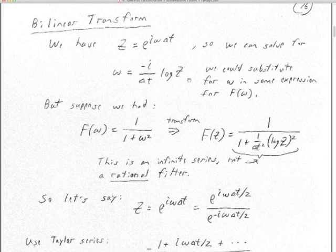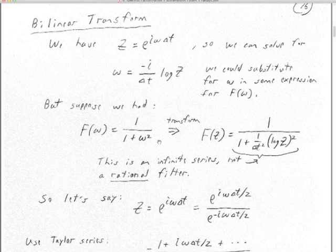Here's a bandpass — actually a low-pass — filter: 1 over the quantity 1 plus omega squared. For high frequencies it'll have low response, and it has its maximum response at zero frequency. Let's substitute in the bilinear transform definition of omega. On the denominator we have 1 plus 1 over delta t squared, and minus i squared is 1, so we end up with log z squared. If you express the log as a Taylor series, you can evaluate this, but you get this infinite series on the denominator — a doubly infinite series.